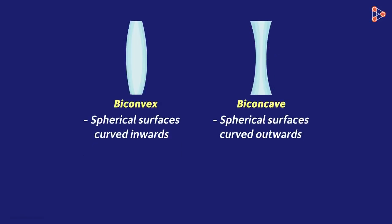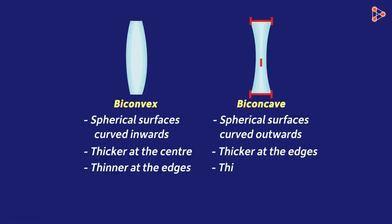One more way to distinguish between a convex and a concave lens is that a convex lens is thicker at the center and thinner at the edges, while the concave lens is thicker at the edges and thinner at the center.